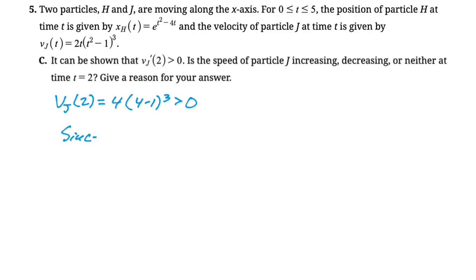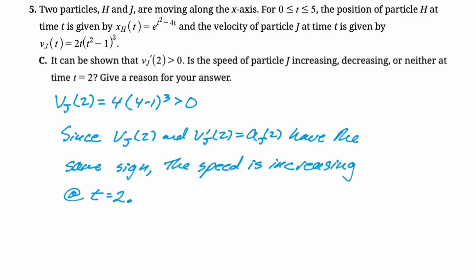And then velocity and acceleration have the same sign, so we're going to say that speed is increasing. But I'm going to be careful here, because they're giving us v'_J, and what I want to do is relate that to the acceleration. So I'm going to say v'_J(2) is a_J(2). They have the same sign, and therefore the speed is increasing at t equals 2. And I think that's all we need to do for that. Pretty straightforward.